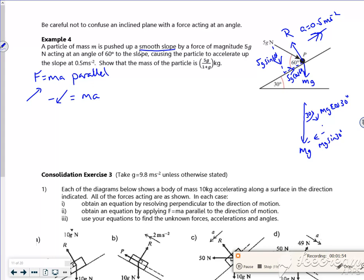Let's think about the forces pushing it up. The forces pushing it up the slope is the 5g cos 60, the component of the 5g pushing it in the direction of the slope. The forces opposing that motion is mg sine 30. It's smooth so there is no friction.